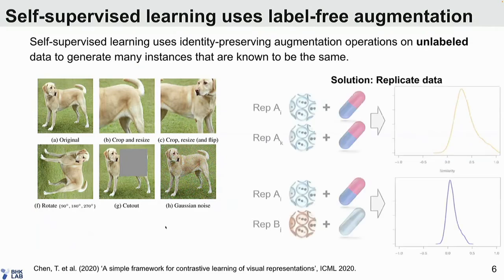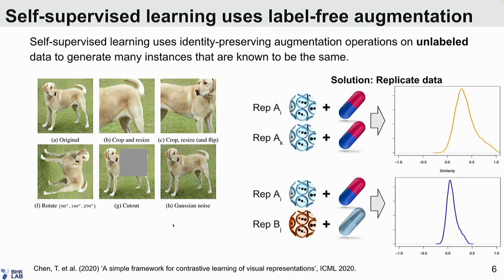The solution is to use replicate data. We can take a signature of a perturbation in some cell context, and the assumption is that replicates of that signature should tend to be similar to each other, whereas different signatures are not assumed to be similar. So we want to bring replicate similarities close together while leaving the distribution of similarities for other pairs of signatures unchanged.